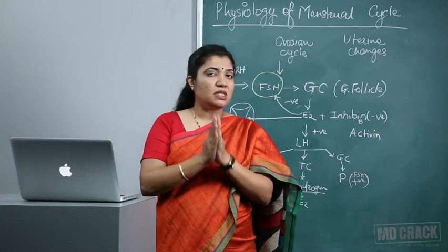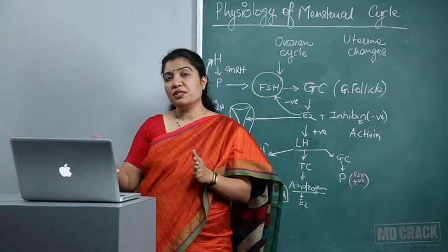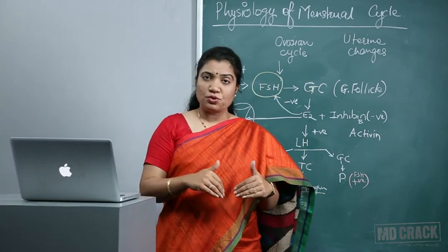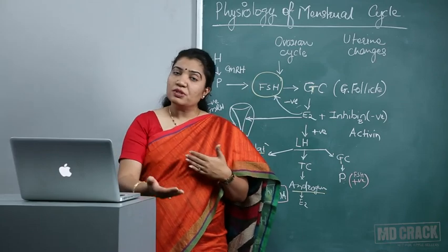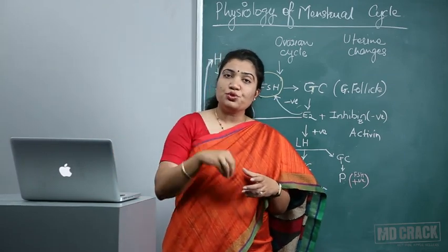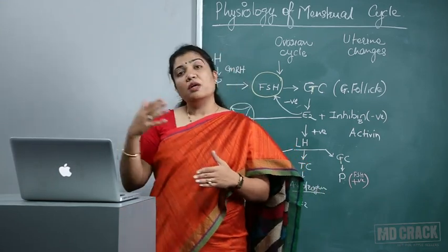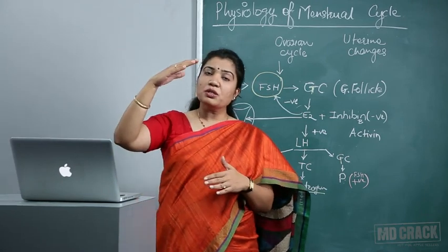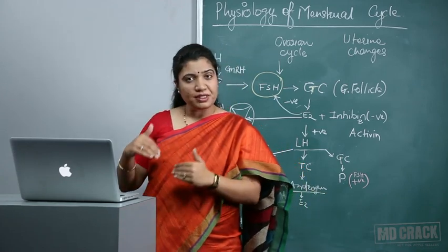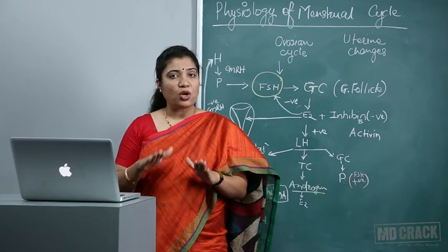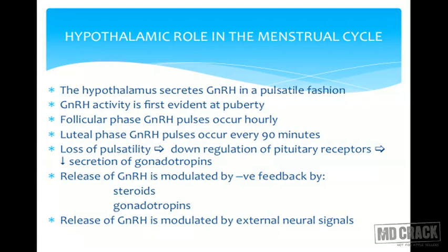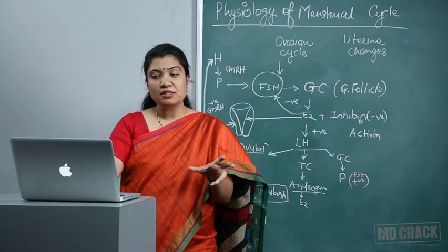The hypothalamus secretes GnRH, which acts on the anterior pituitary, which secretes FSH and LH, which act on the ovary. Estrogen and progesterone — according to the phase — act on the uterus. Estrogen causes proliferative changes in the endometrium, and when progesterone comes in it acts on the estrogen-primed endometrium and leads to secretory changes. If hormones in the blood provide negative feedback on GnRH, GnRH decreases, FSH and LH decrease, estrogen and progesterone decrease, and there is withdrawal causing shedding of the endometrium.